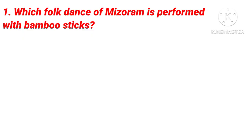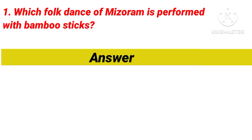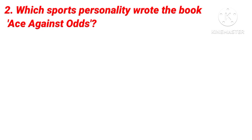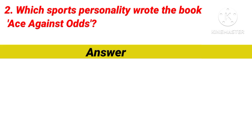Question 1: Which folk dance of Mizoram is performed with bamboo sticks? Answer is Cheraw. Question 2: Which sports personality wrote the book 'Ace Against Odds'? Answer is Sania Mirza.